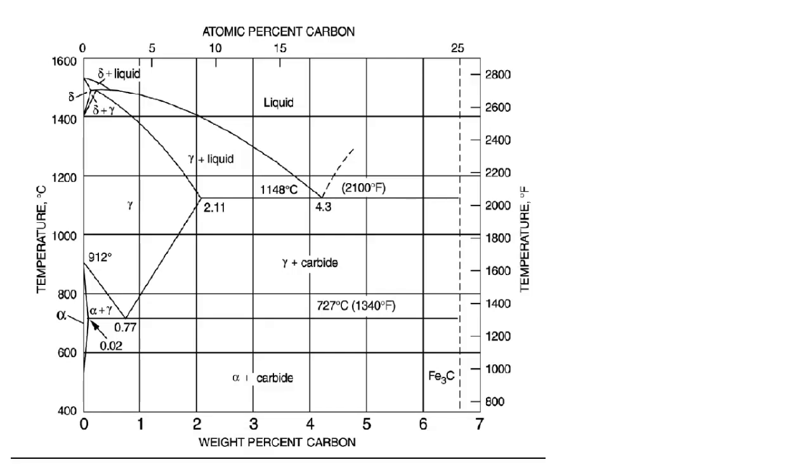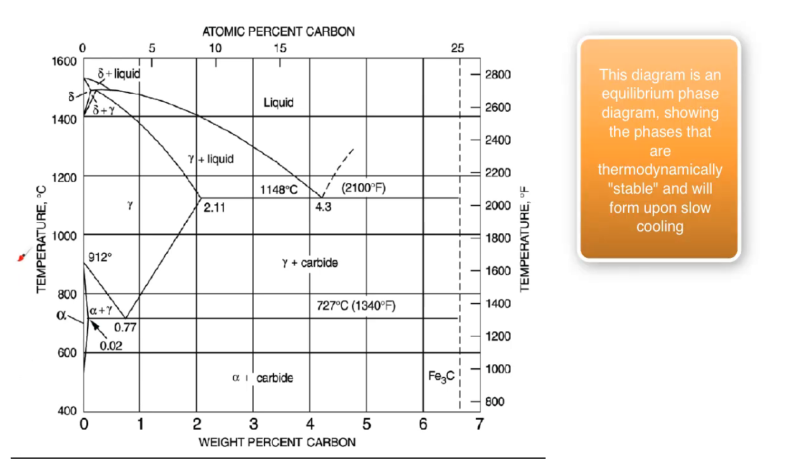I want to show you how the iron-carbon phase diagram can be used to predict the phases that will form if the sample is allowed to slowly cool. So you know that we have on this axis is temperature. This axis is weight percent carbon.